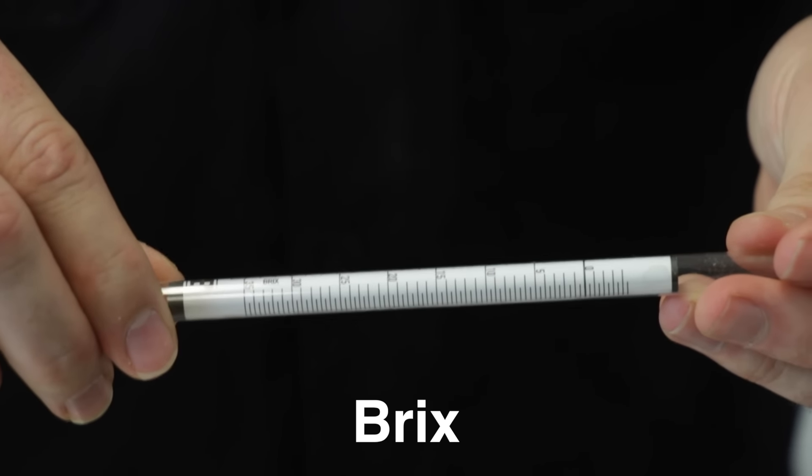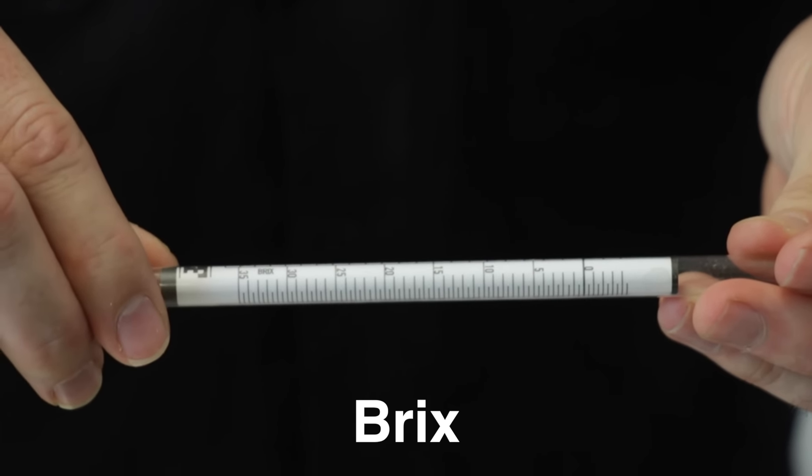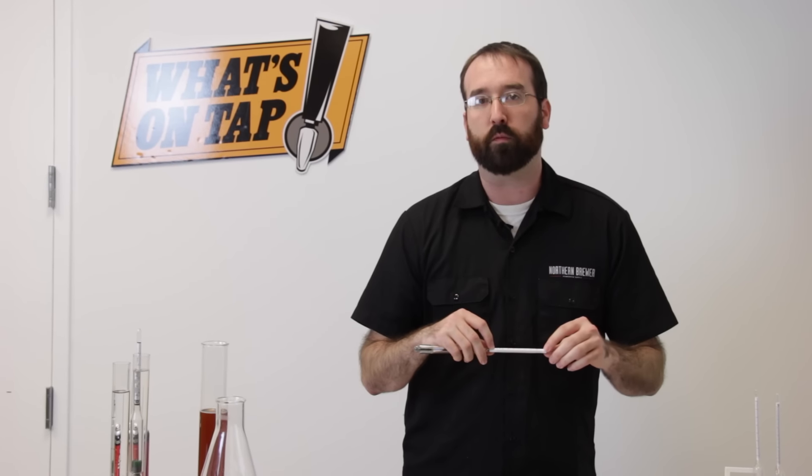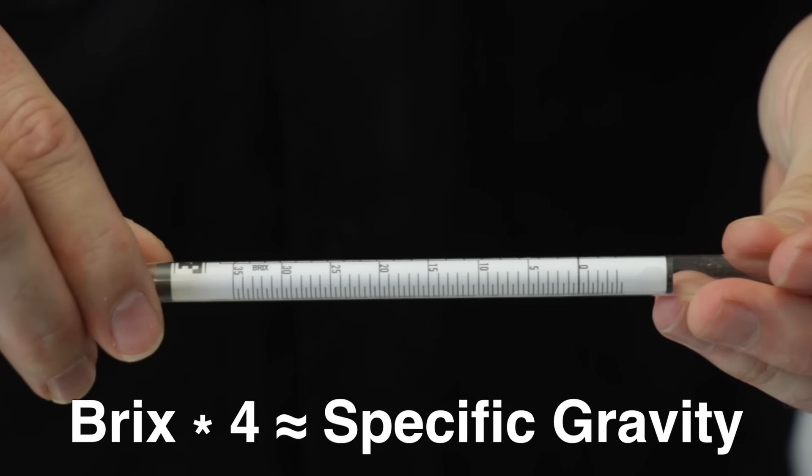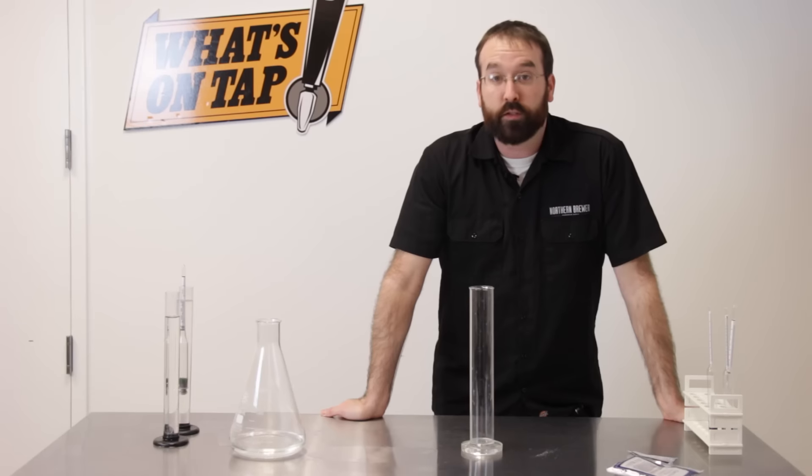On this side, you have Brix. Brix generally isn't used by brewers, but if you do want to use it, you definitely can. A general rule of thumb: if you multiply your Brix units times four, you end up with specific gravity.